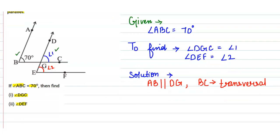We can say that angle 1 equals 70 degrees. Why? Because angle DGC is equal to angle ABG, as these two angles are corresponding angles.